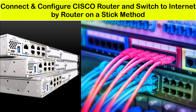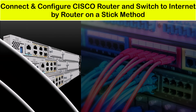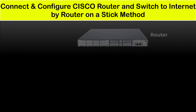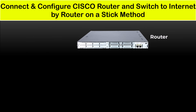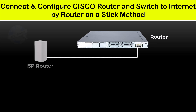First, let me show you my network diagram and physical connectivity. This is my Cisco router that I am using in this video — it has two FastEthernet ports. I will connect my Cisco router FastEthernet0/0 port to my home ISP router, and I will configure this port as DHCP enabled so it will get the IP address from the ISP router via DHCP.